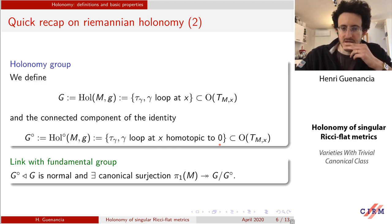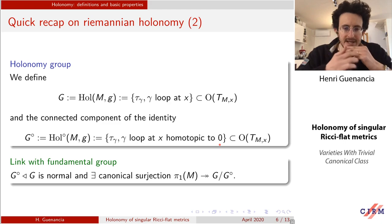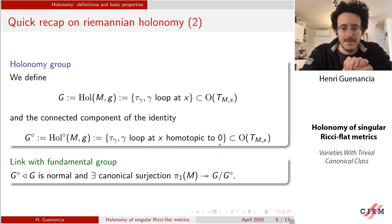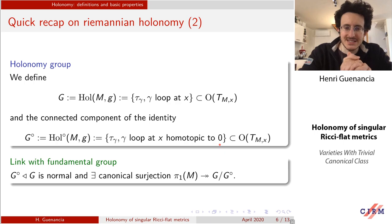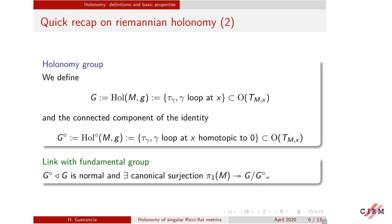Two remarks: G^0 is normal in G. The group of connected components G/G^0 is controlled by pi_1 of M — more precisely, there is a natural surjection from pi_1(M) to G/G^0. So pi_1(M) could be much bigger than G/G^0, but G/G^0 is controlled by this topological quantity.